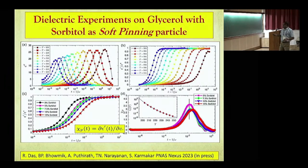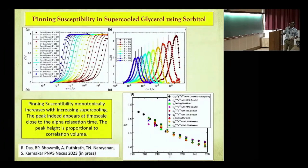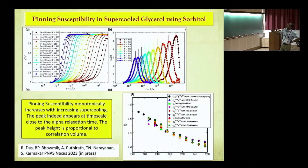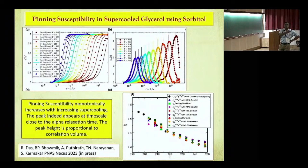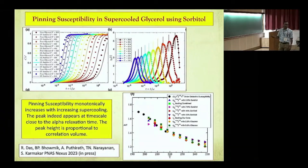The fact that at all these concentrations you are computing the same volume tells you that the scaling argument I proposed is not contradicted. I cannot prove beyond doubt that this is measuring a static correlation, but the data does not contradict the scaling argument. Another test: keeping sorbitol concentration fixed, varying temperature — the vertical lines mark the relaxation time — and the susceptibility peak indeed appears at the typical structural relaxation time. Then you take the peak heights, take their one-third power, and plot them as a function of temperature. All the data for various sorbitol concentrations give more or less the same length scale.